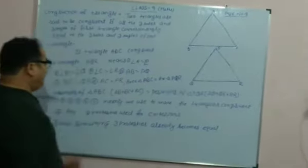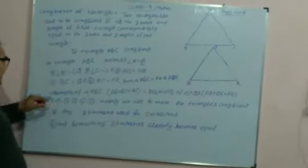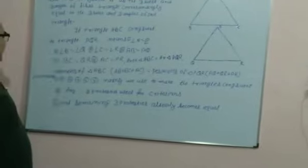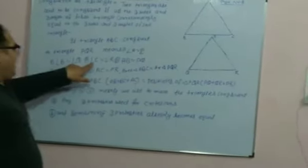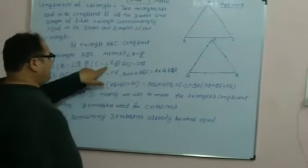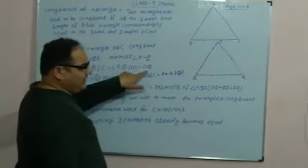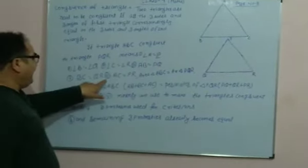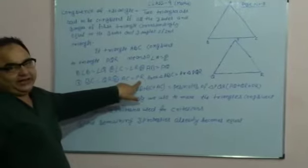So we have six properties. What are the properties? Angle A equals angle P, angle B equals angle Q, angle C equals angle R — those are the three angles. And AB equals PQ, BC equals QR, AC equals PR — those are the three sides.